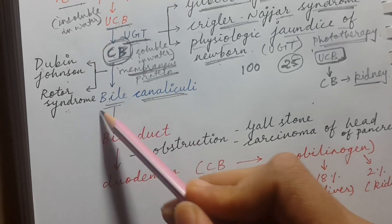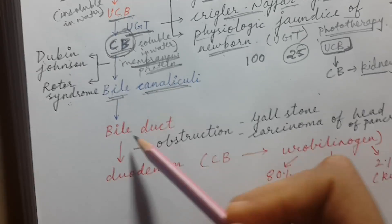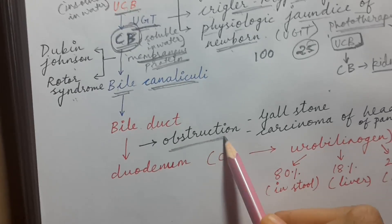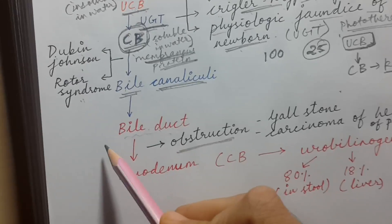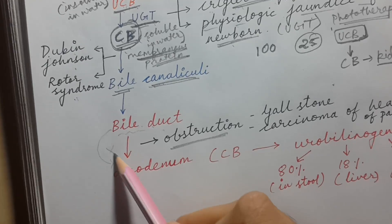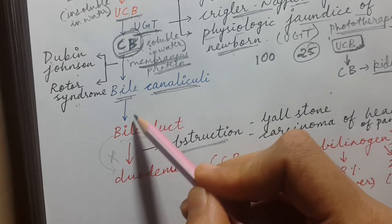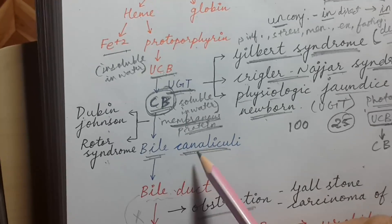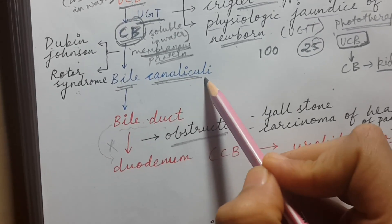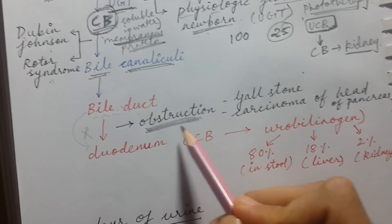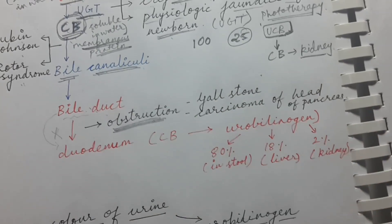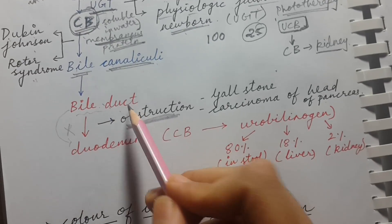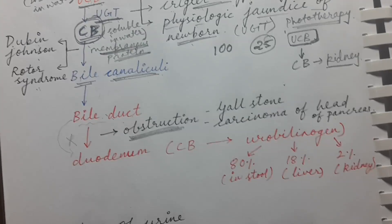From bile canaliculi, bile along with bilirubin goes into the bile duct and then into the duodenum. If there is obstruction of the bile duct, conjugated bilirubin cannot reach the duodenum — it backs up, accumulates within the bile duct and bile canaliculi, and eventually ruptures them. The two classic causes of obstruction are gallstone and carcinoma of the head of the pancreas, both causing excess conjugated bilirubin.